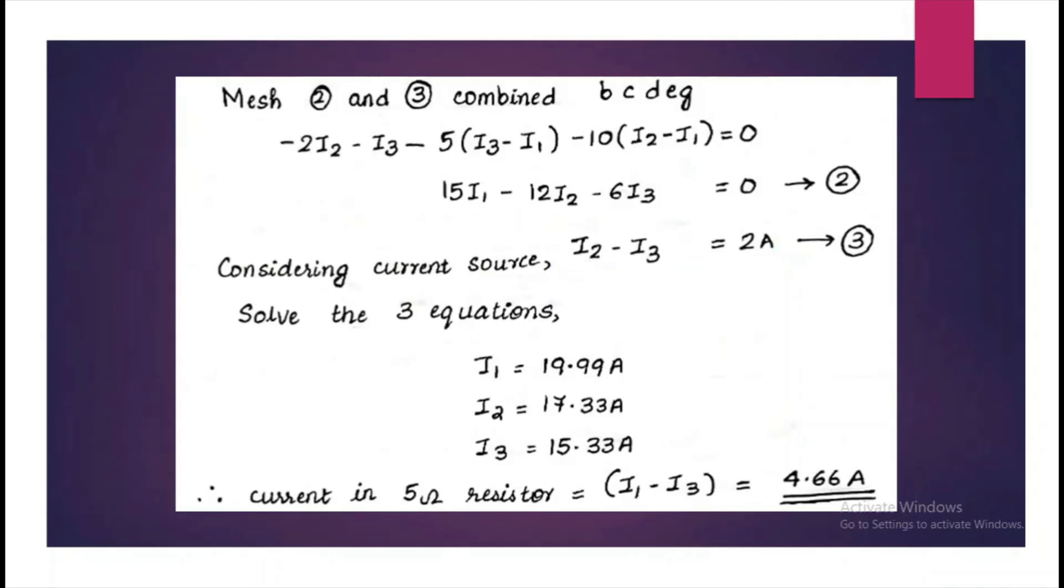We can use either calculator or Cramer's rule in order to solve the three equations, and we will get i1, i2 and i3.